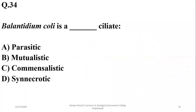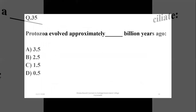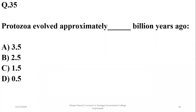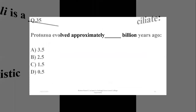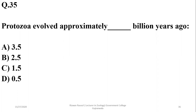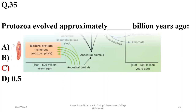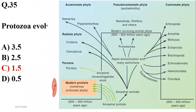Question thirty-four: Balantidium coli is a parasitic ciliate found in the colon or large intestine of many pig breeds. Question thirty-five: protozoans evolved approximately 1.5 billion years ago from ancestral prokaryotic organisms. The correct option is C.